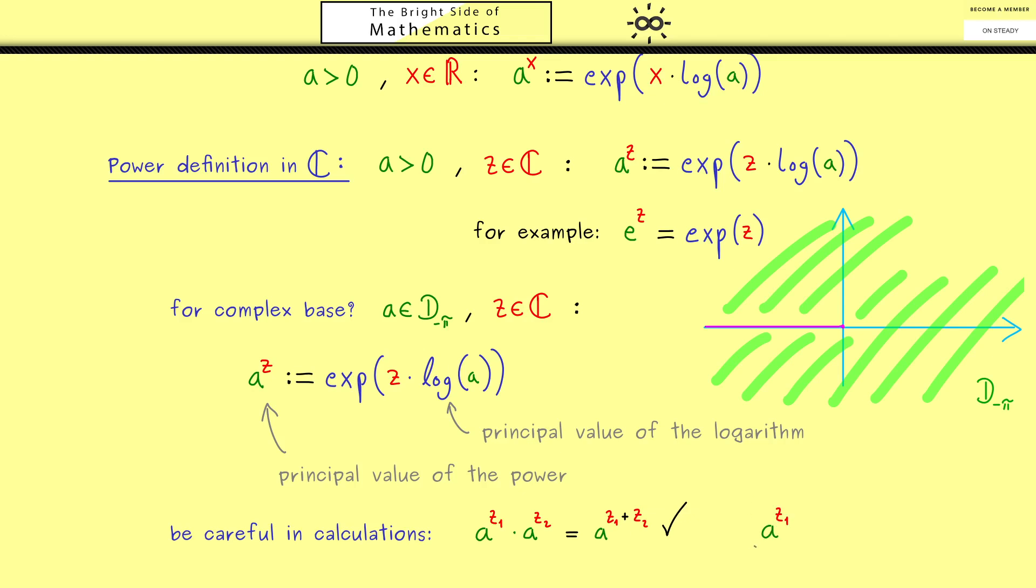However, another power rule where you have a to the power z1 to the power z2 does not hold in general anymore. More precisely, in general this is not equal to a to the power z1 times z2. Therefore, you should be careful when you calculate with complex powers in this sense.